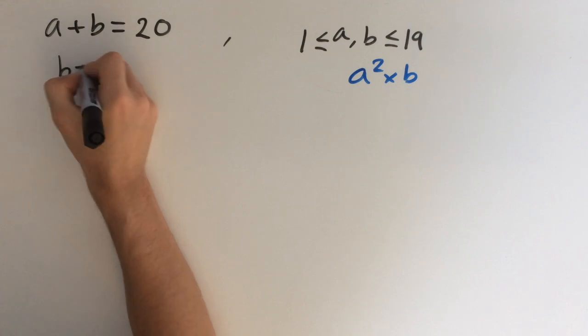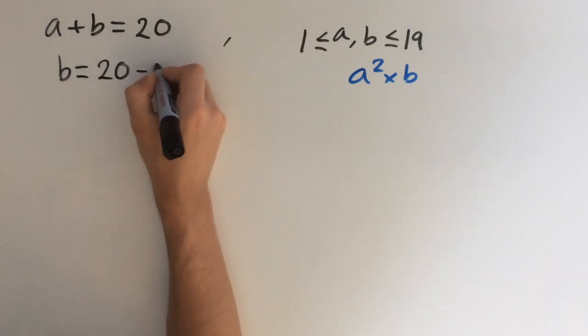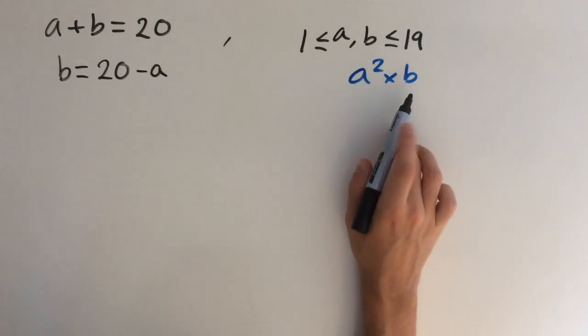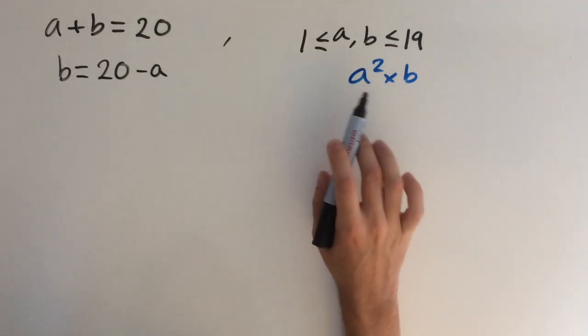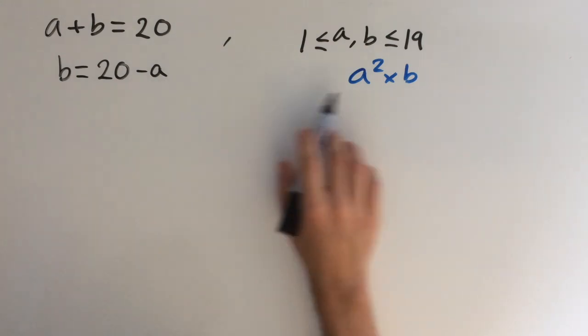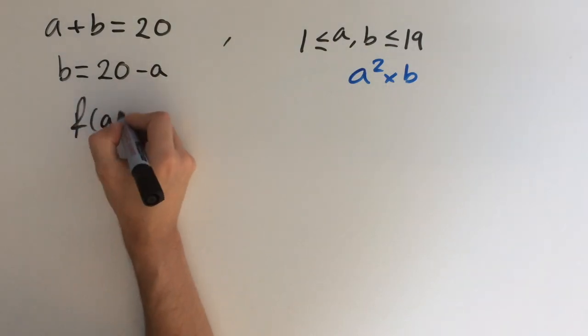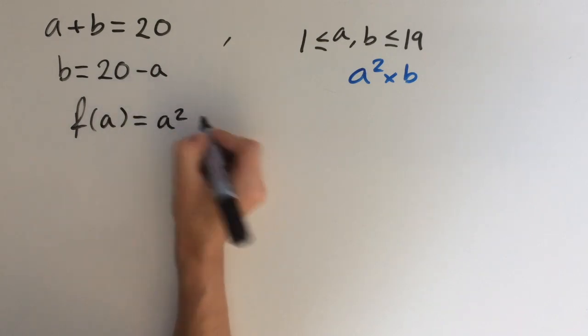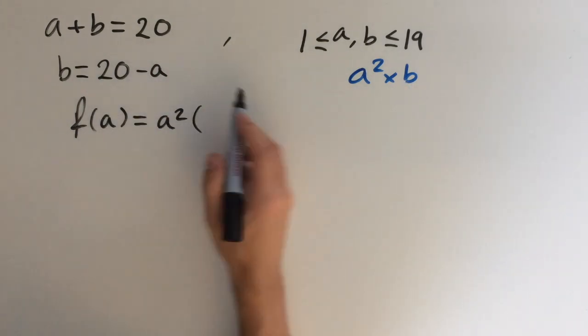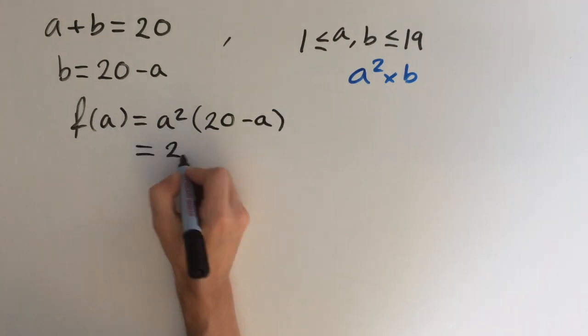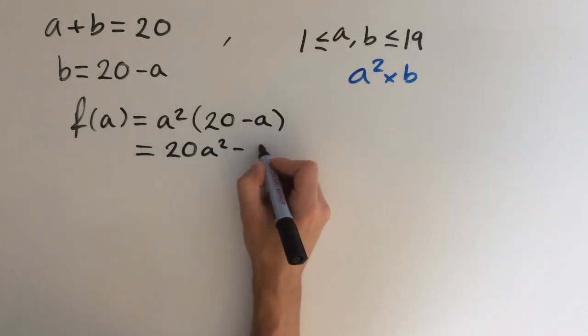Let's rearrange for b. This will be 20 minus a. Now we're going to substitute b into this expression. It's easier to substitute in for b. You can also do a, but it'll be a bit more complicated. So now we're going to get a function only in terms of a. Let's call it f. f of a equals a squared, and we substitute in for b. We get 20 minus a. You can expand this out to give us 20 a squared minus a cubed.